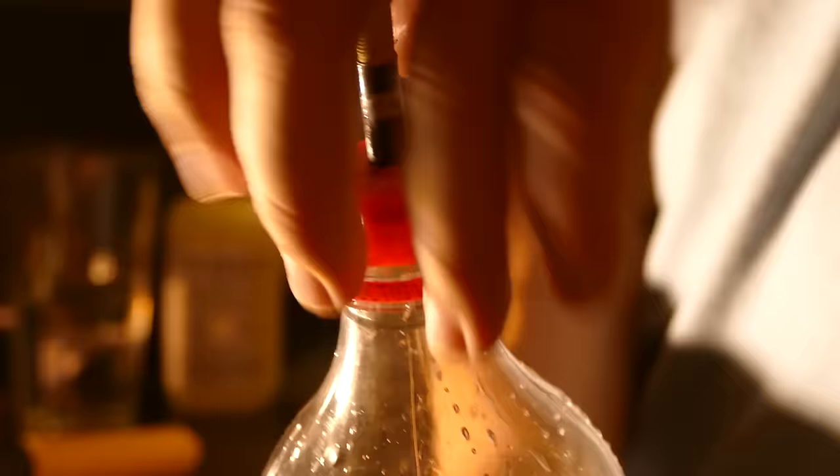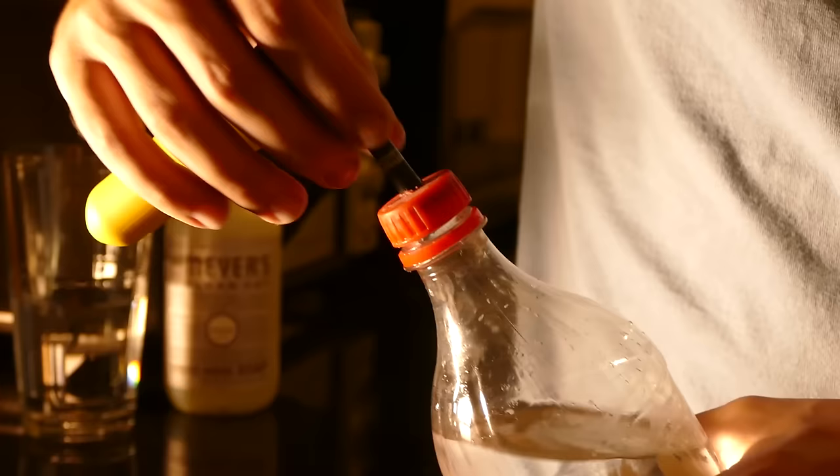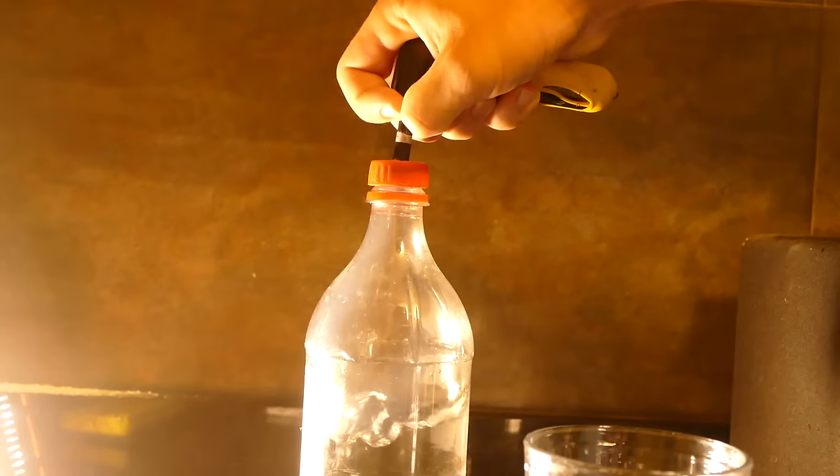Now, we can go ahead and screw on the top. Give it a squeeze to make sure it's airtight. Now, we can go ahead and hook up our CO2 bike pump, give it a little squeeze to add some CO2.